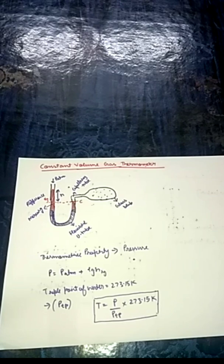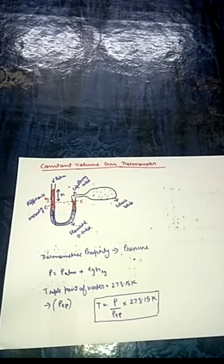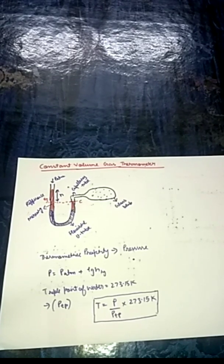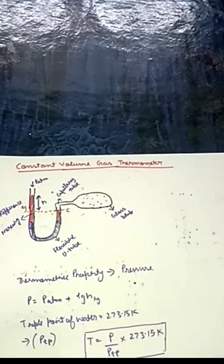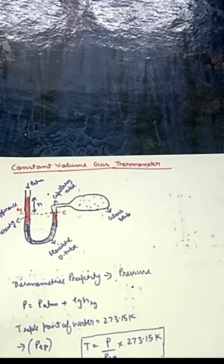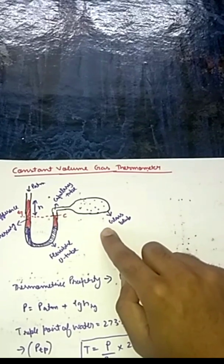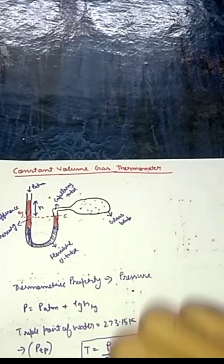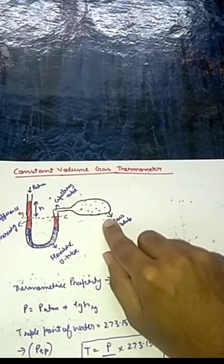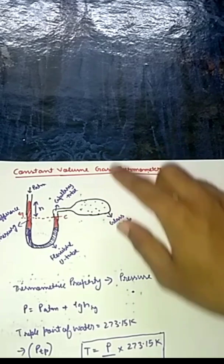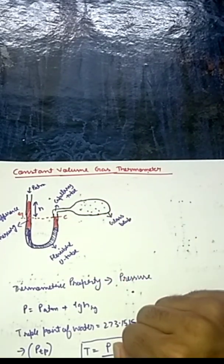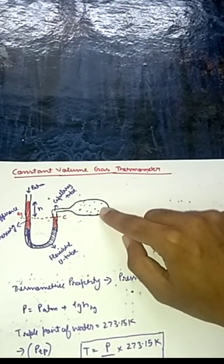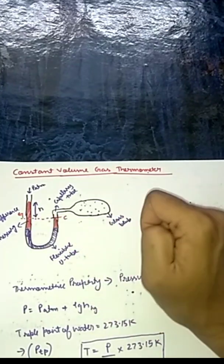Hello and welcome back to my channel. In today's video I'll be talking about the next type of thermometer, which is a constant volume gas thermometer. I will try to explain it as simply as possible. This is the figure — we have a glass bulb, and as the name suggests, it is a constant volume gas bulb.